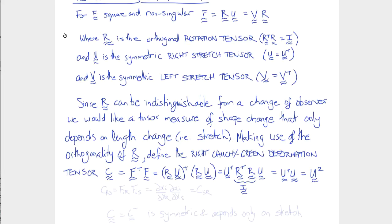In component notation, the components of C would be given by fir, fis, which would leave Crs, or del xi del xr, del xi del xs. And notice that if we switch the orders of r and s, we get the same expression. So C is symmetric, which we would expect because U is symmetric.